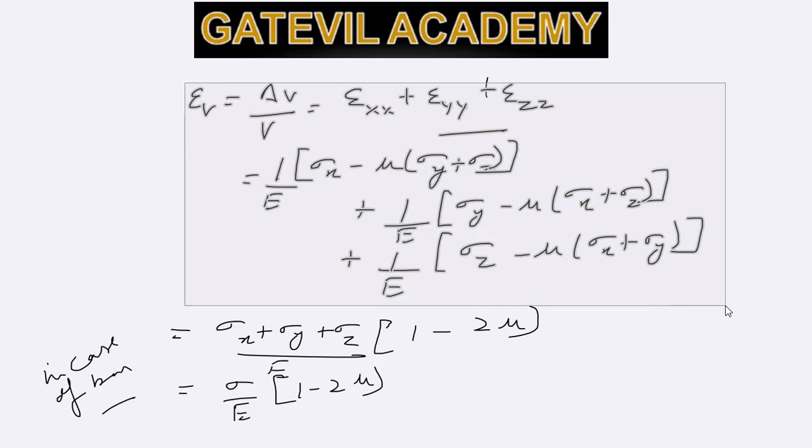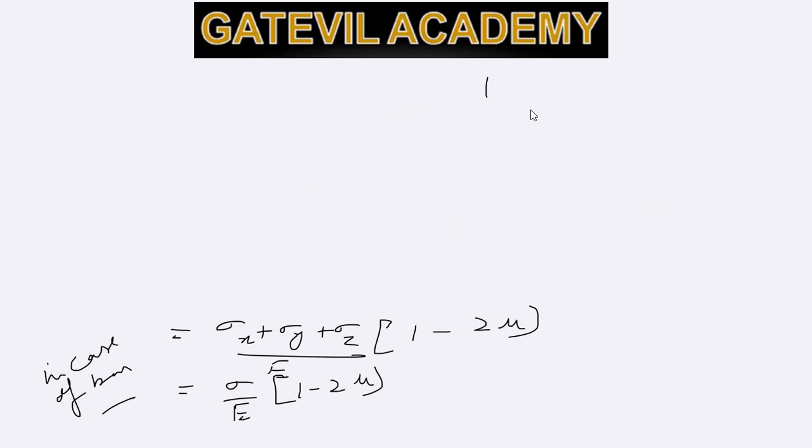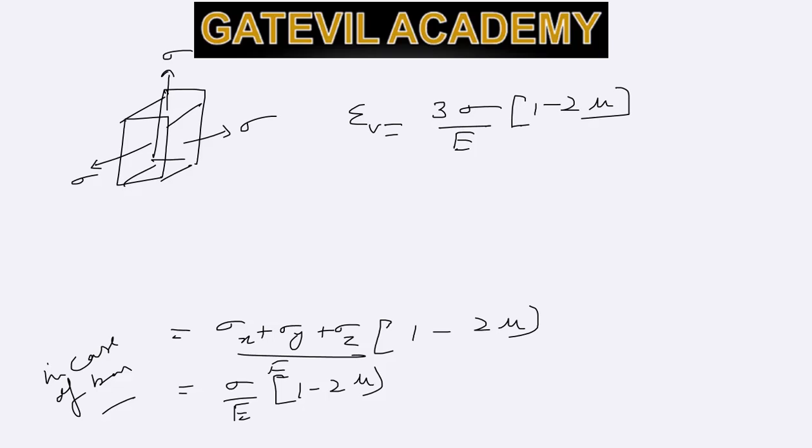If in a 3D object same stresses are applied to the three dimensions of the body, like sigma in x direction, sigma in y direction, and sigma in z direction, then epsilon v will turn out to be 3 sigma by e multiplied by 1 minus 2 mu.